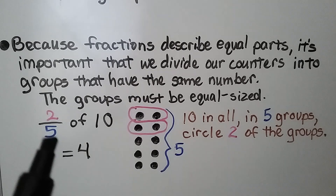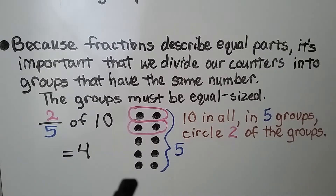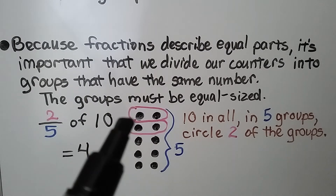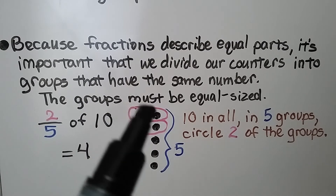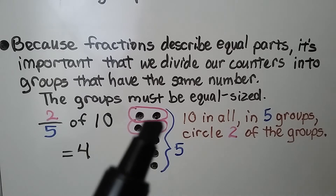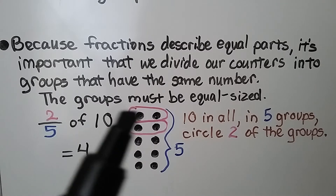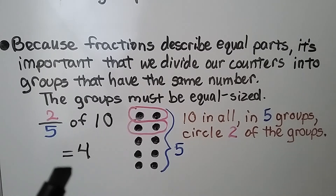We have two-fifths of ten. We make five rows and we circle two of the rows. There are ten in all. In five groups, we circle two of the groups. We count the number of counters. In those two groups, there are four altogether, so two-fifths of ten is equal to four.